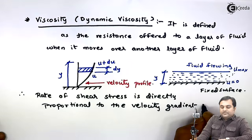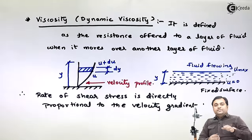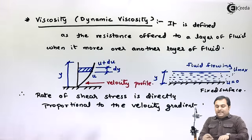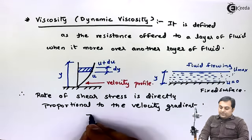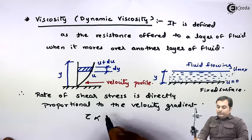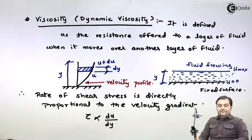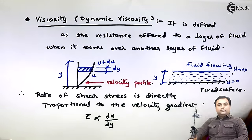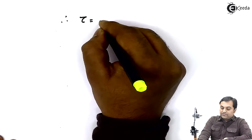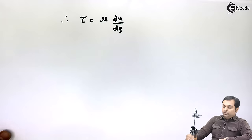The meaning of this statement is that when the layers are moving one over the other with different velocities, there are chances of the layers shearing — they would be slipping. That slipping action is the rate of shear stress. Shear stress is denoted by tau and is directly proportional to the velocity gradient, which is change in velocity upon change in distance, du/dy. Replacing the proportionality sign with a constant, shear stress equals mu times du/dy.